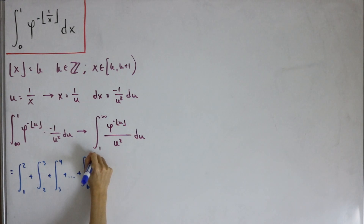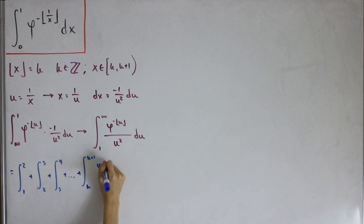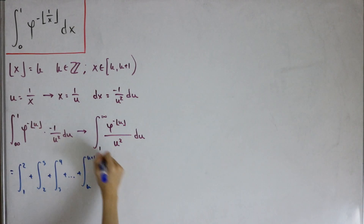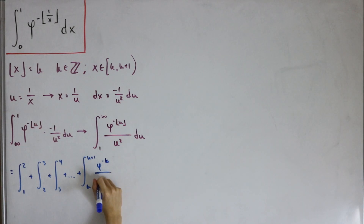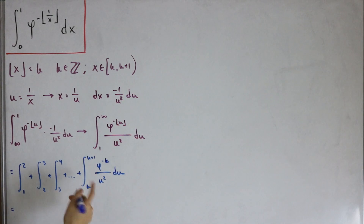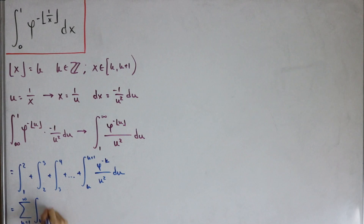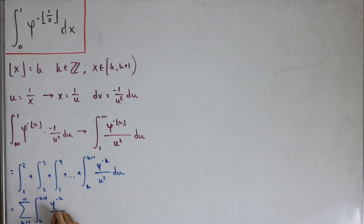The general term runs from k to k+1 of φ^(-floor(u)) / u² du. Since floor(u) = k on the interval [k, k+1), we can replace floor(u) with k. This means we have an infinite sum: the sum from k=1 to infinity of the integral from k to k+1 of φ^(-k) / u² du.